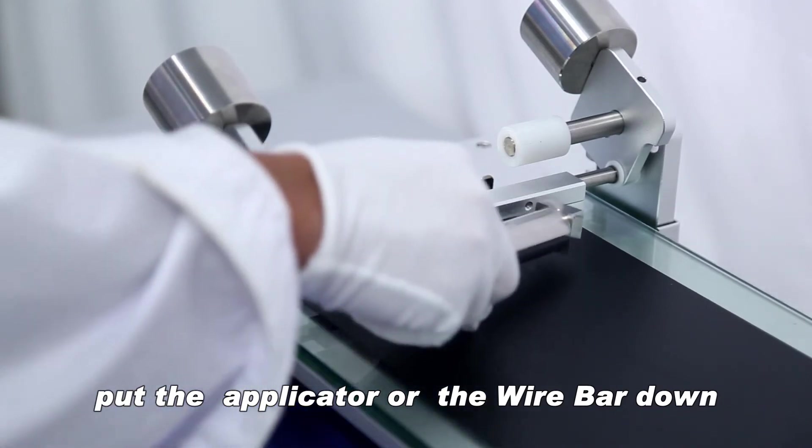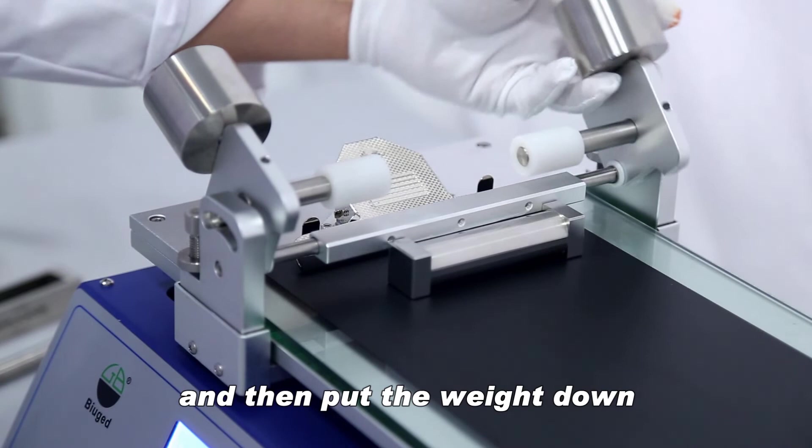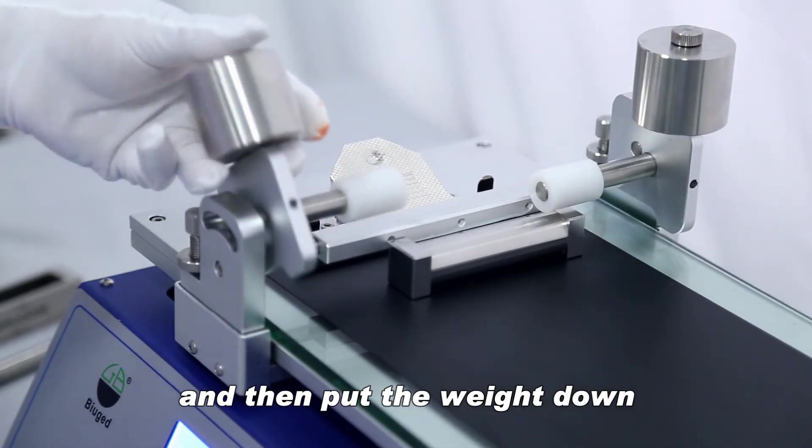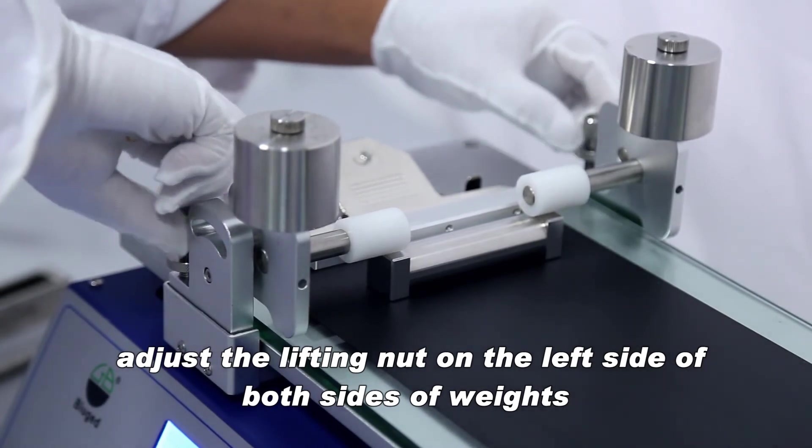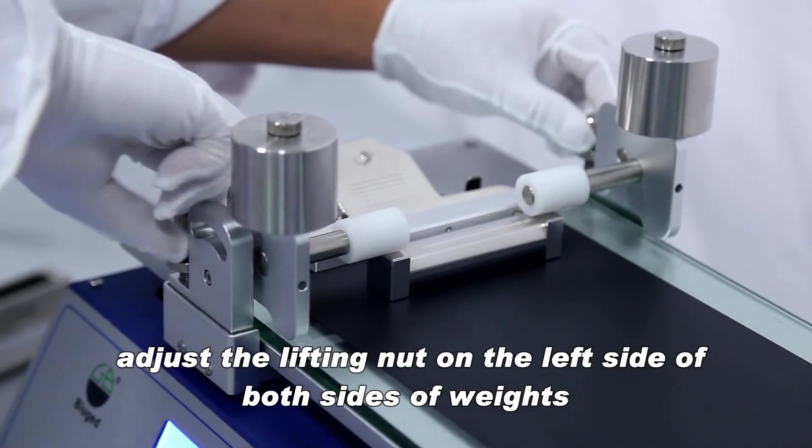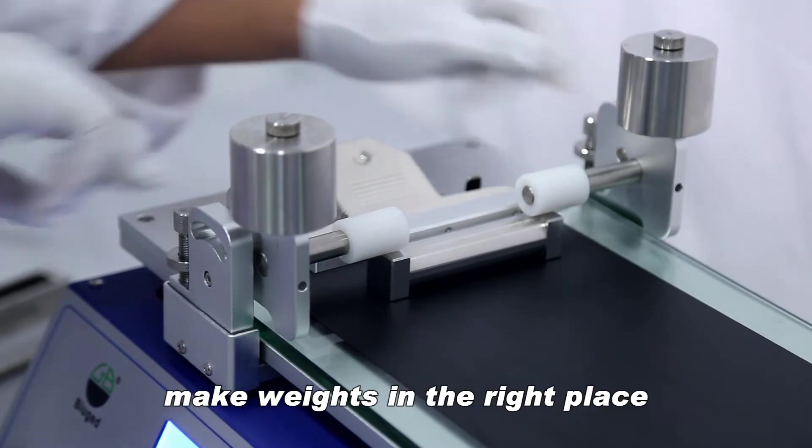Put the applicator or the wire bar down, and then put the weight down. Adjust the lifting nut on the left side of both sides of weights. Make weights in the right place.